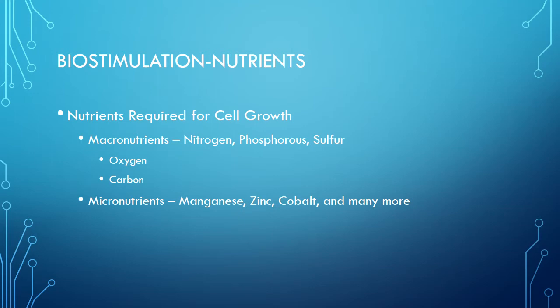Biostimulation is the addition of nutrients to the environment to promote microbial growth. These nutrients can be divided into two categories, macronutrients and micronutrients. Macronutrients consist of nutrients that are required by the cell in large quantities and include nitrogen, phosphorus, and sulfur. Potassium, calcium, iron, and magnesium are considered macronutrients as well, but are not required in such large quantities as nitrogen, phosphorus, and sulfur. Macronutrients are most often used in creating the cell structure and performing cell metabolism processes.